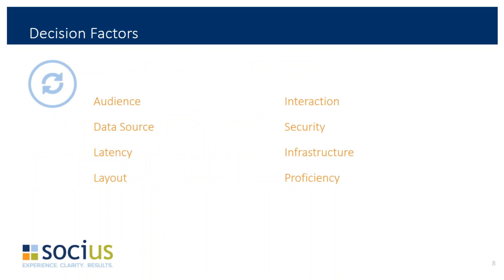The decision factors — we've narrowed down to eight. There could be some others, but these are the main categories that we at Socius use as our decision factors. Audience is the top one: who is going to be the consumer of this report, who's making that request? That becomes the audience of the report, and it's definitely a factor I need to take into account because not everybody looks at data the same way.